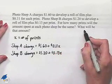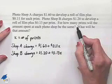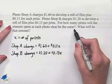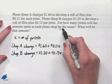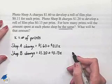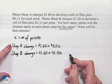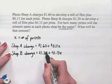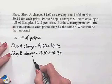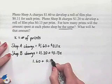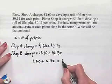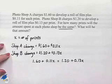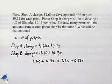Now, in order to work with the problem, we need to set up an equation. We're interested in finding out the number of prints where the amount spent at each Photoshop will be the same. Since we're looking for the amount spent to be the same, that means that the charge from shop A needs to be equal to the charge from shop B. That's going to give us, dropping the dollar symbol, 1.60 plus .11X equals 1.20 plus .13X.